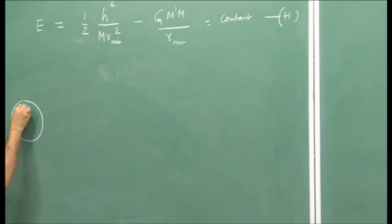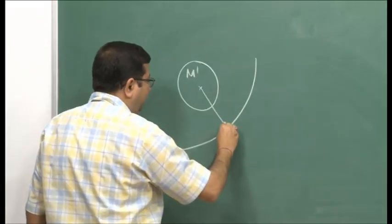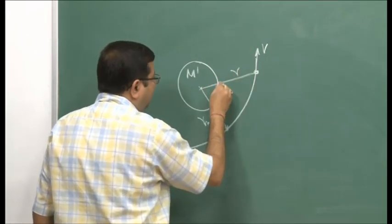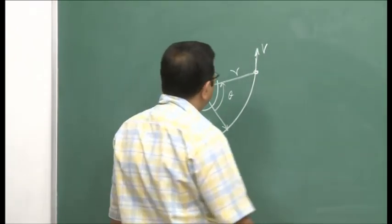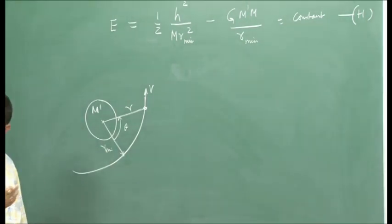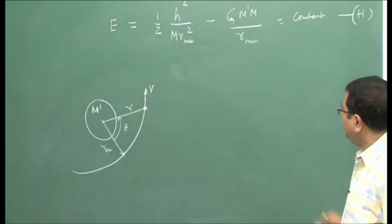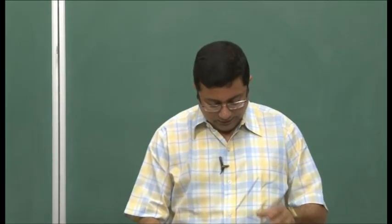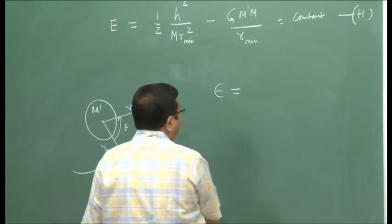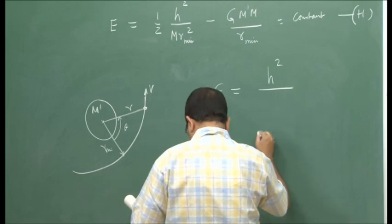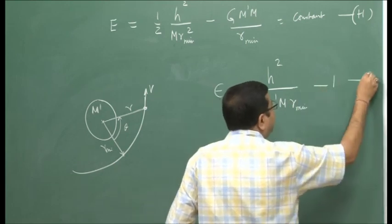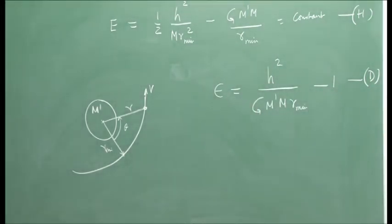This is the minimum point r-min, with M-dash at the center. The vehicle is somewhere here moving with velocity v at distance r and angle theta. Earlier we derived an expression for conic sections showing that the eccentricity epsilon is given as h-squared upon G M-dash r, divided by r-min, minus 1. We had called this equation D, derived in previous lectures.